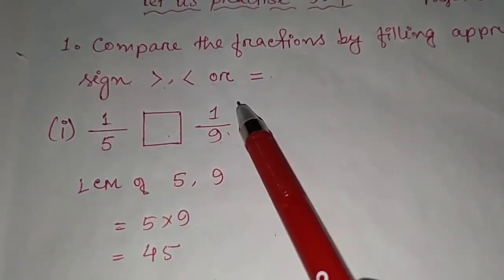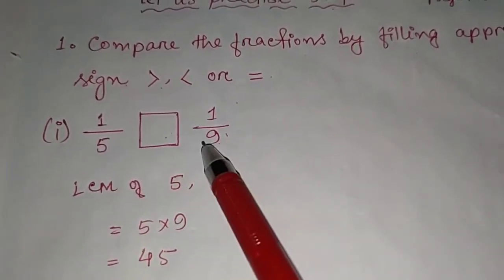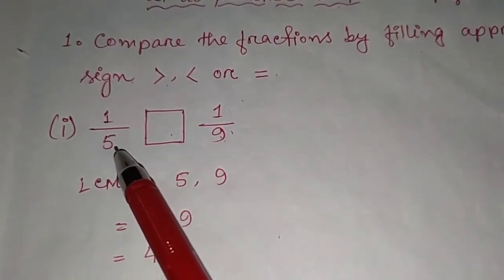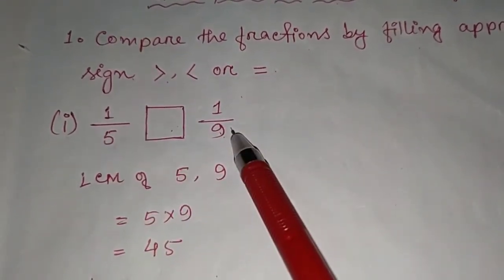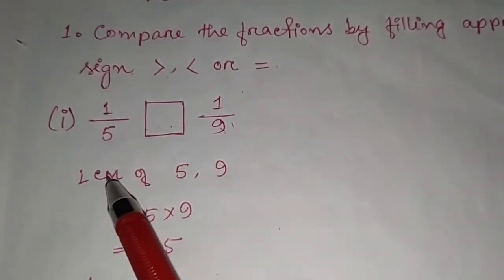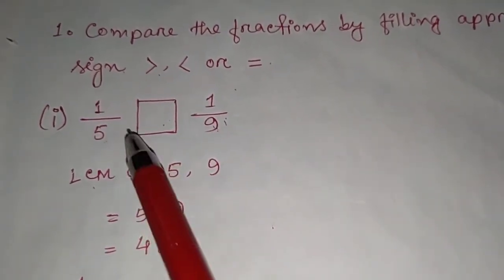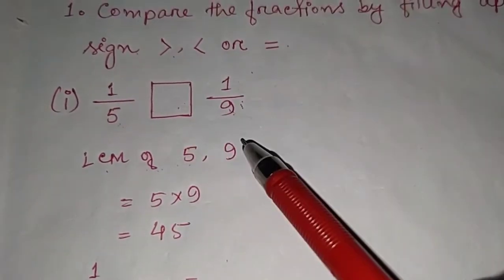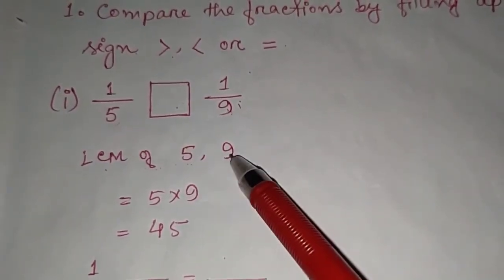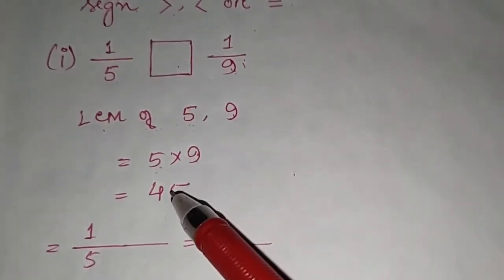You can see the numerators are the same, but the denominators 5 and 9 are different. When the denominators are different, we first take the LCM of the denominators — that is 5 and 9. Since there are no common factors between 5 and 9, the LCM is simply 5 × 9.